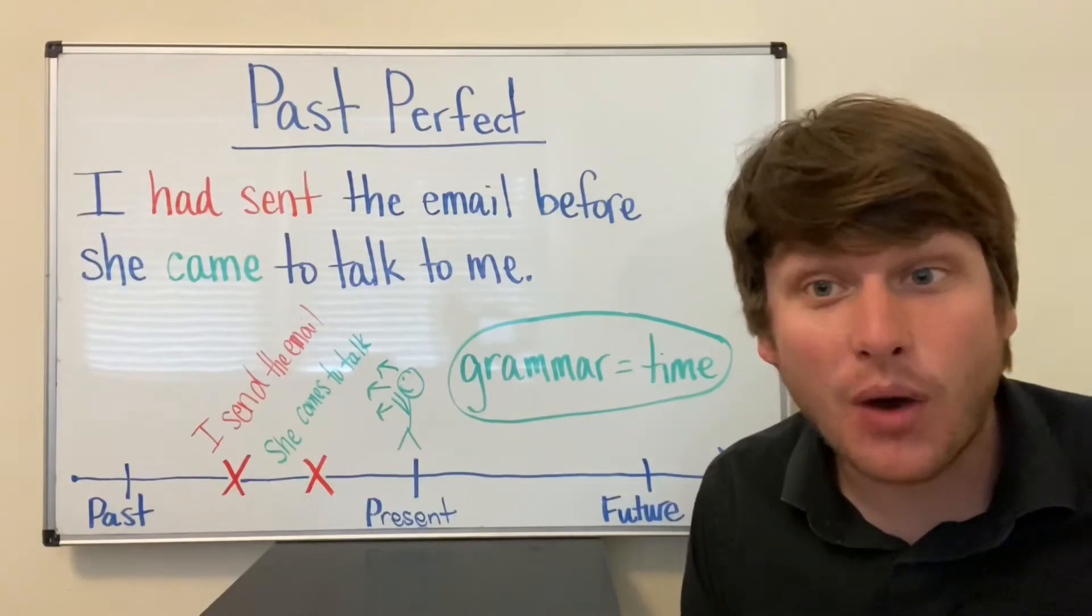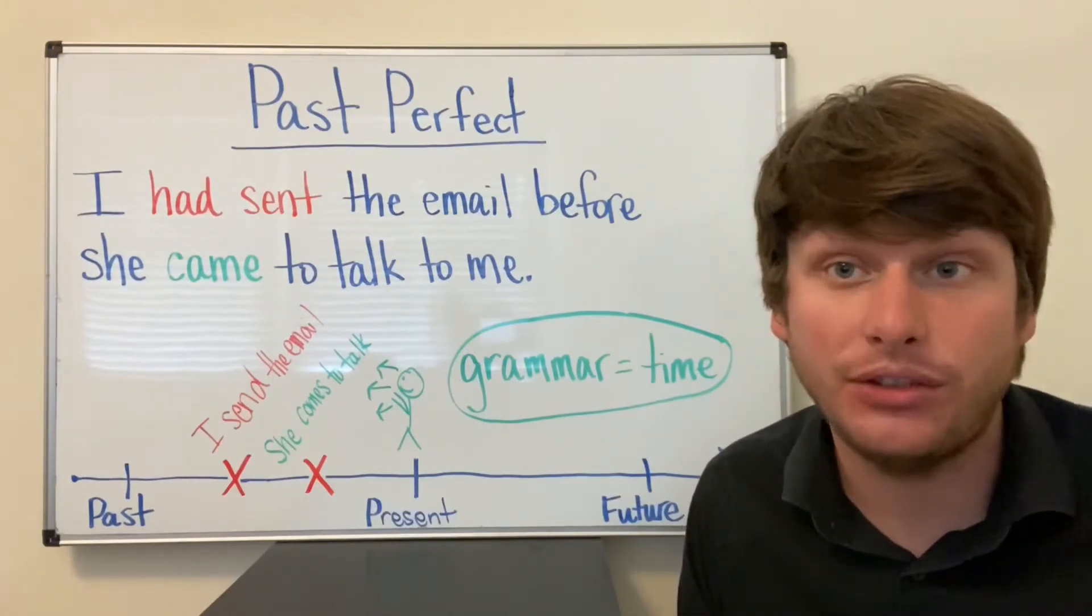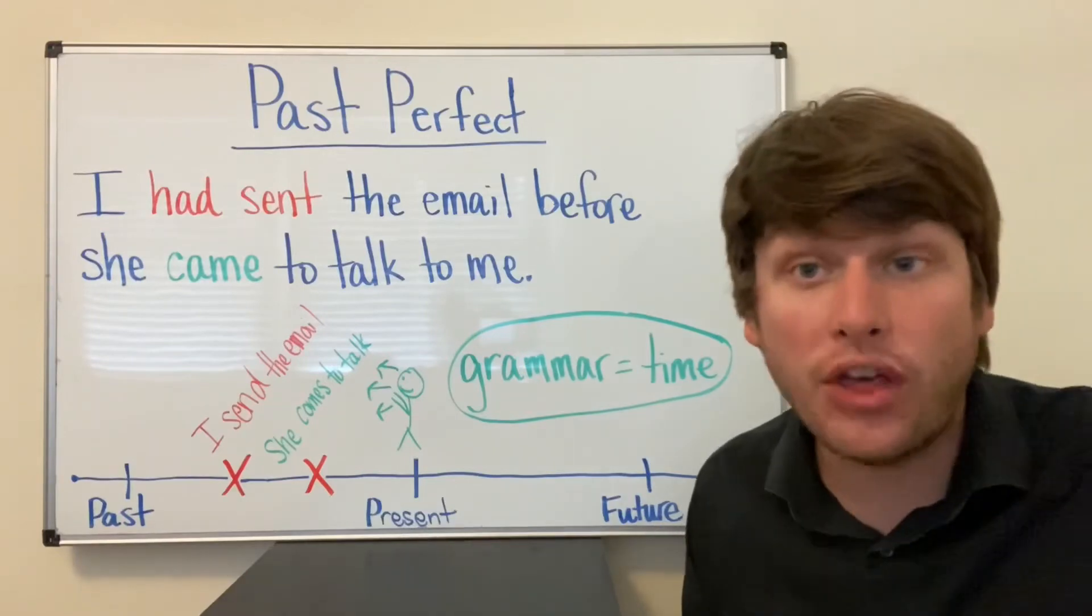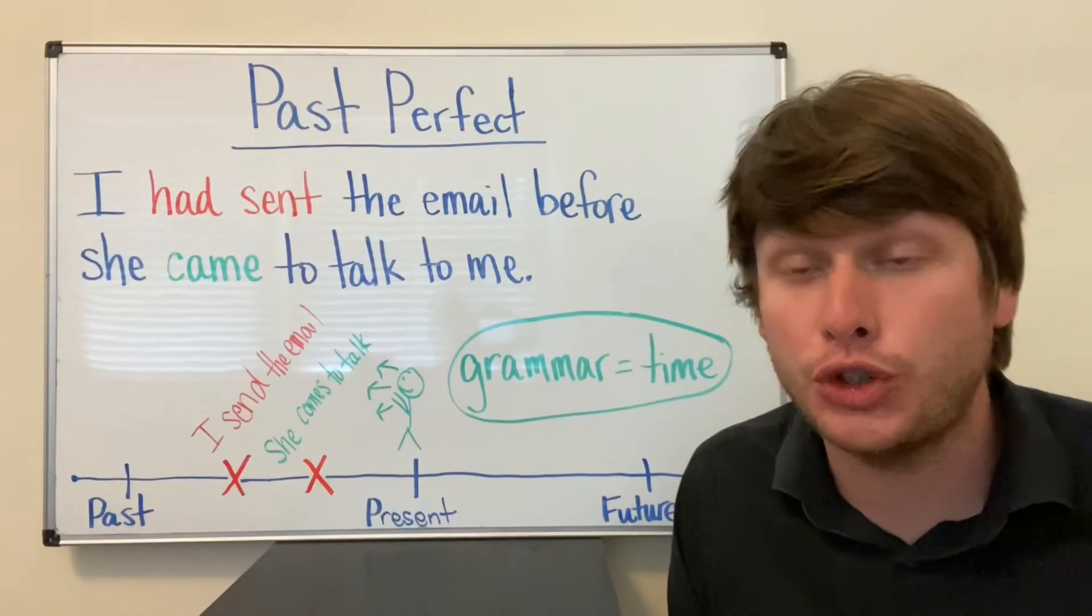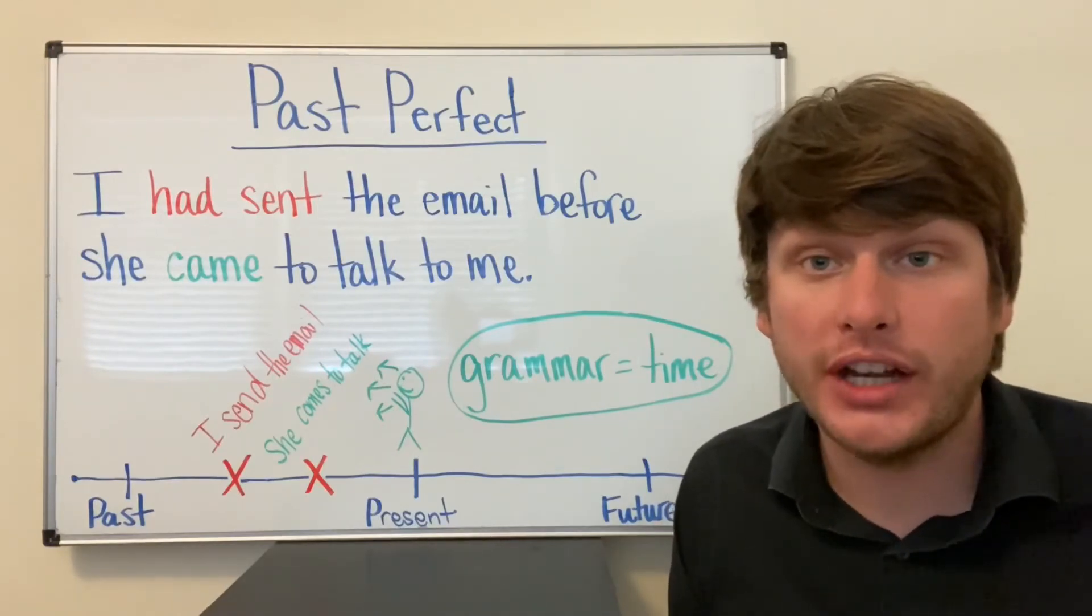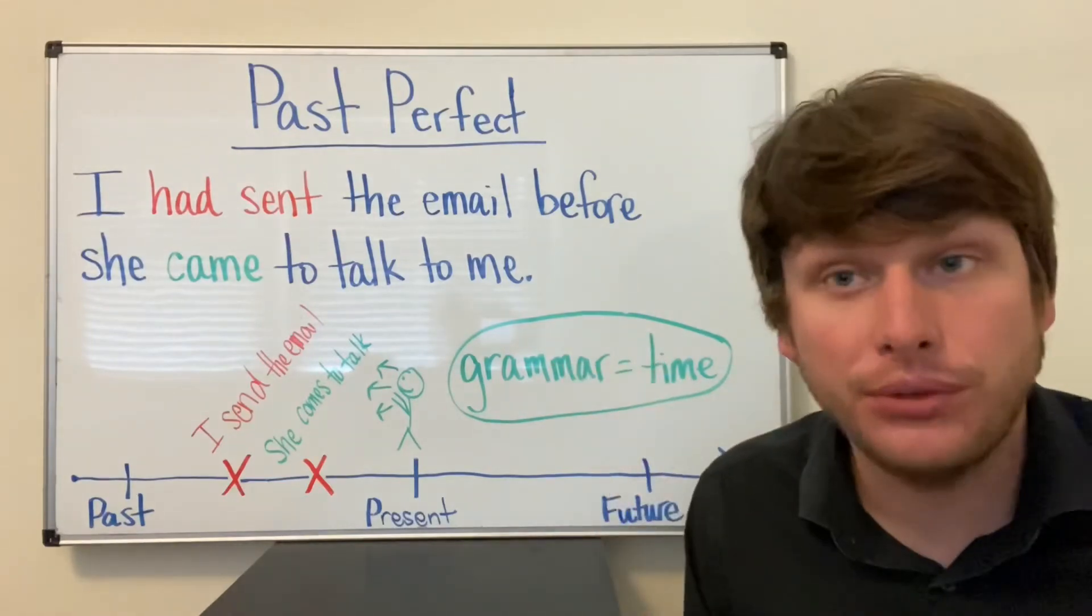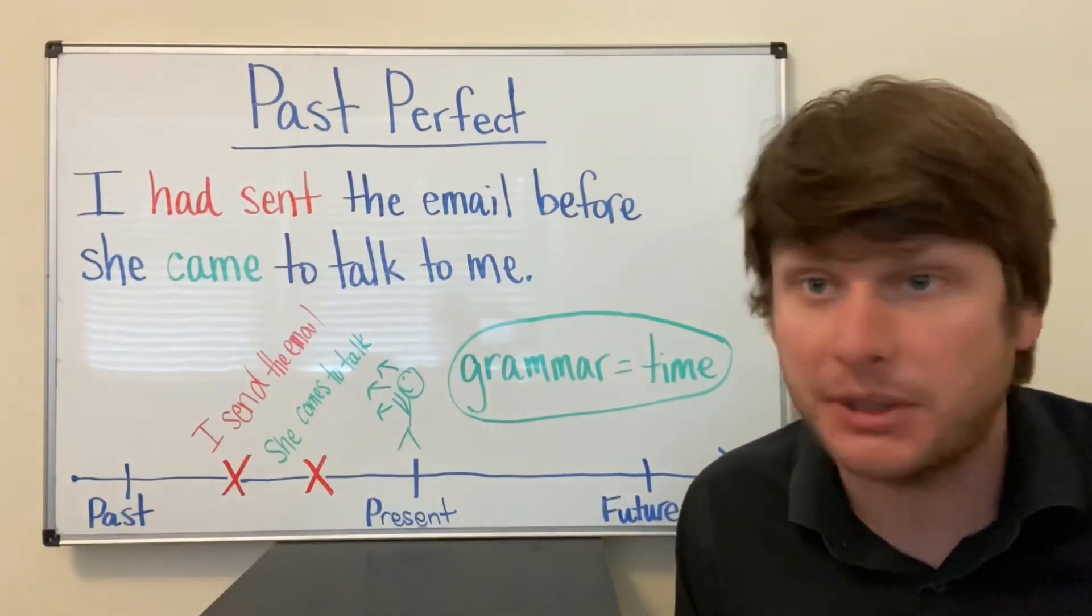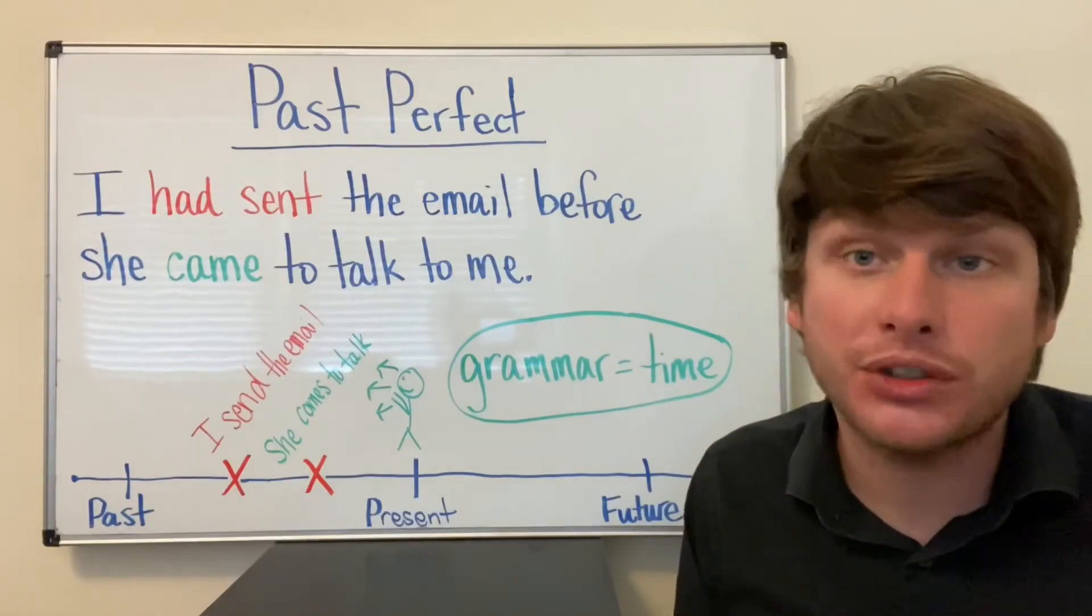Right now, in the present, I am discussing these two events that both happened in the past. And in order to show my listener which one occurred before the other, again, I used the Past Perfect Grammar. I had sent the email before she came to talk to me.